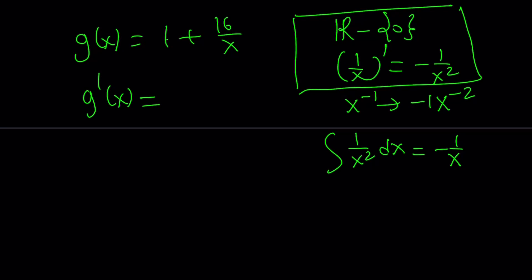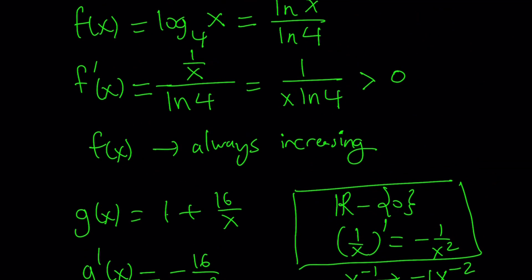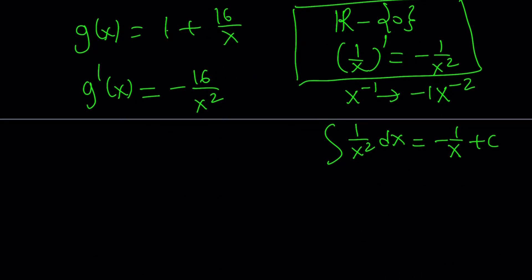So the derivative here, 16 is a constant, therefore the derivative is going to be negative 16 over x squared. Now notice that x squared is positive and it's not 0. And this is always going to be negative. So that means g of x is always decreasing.